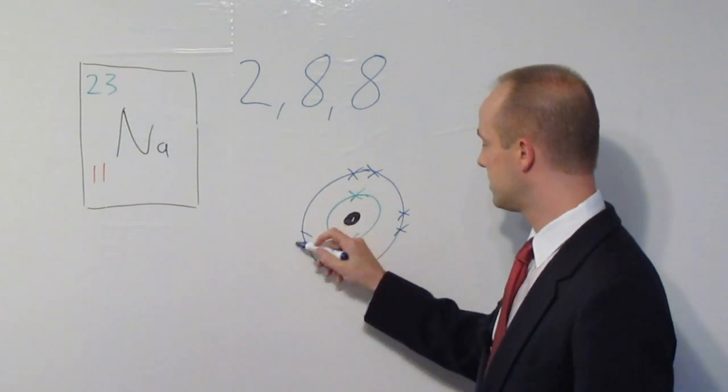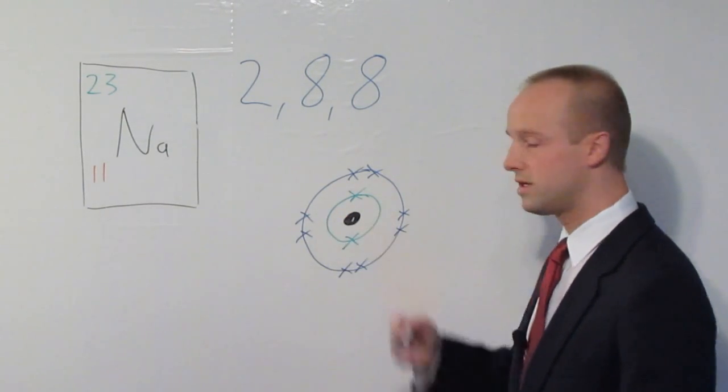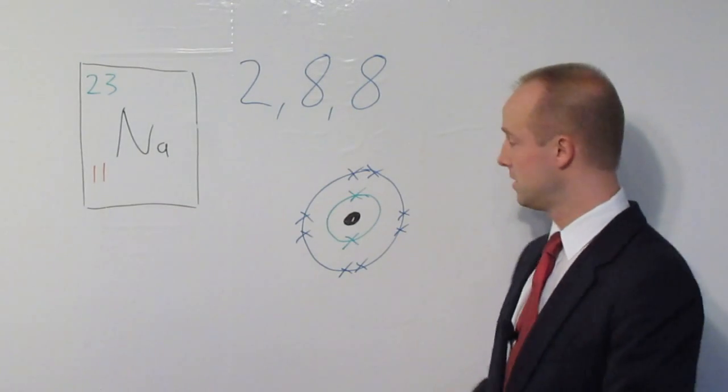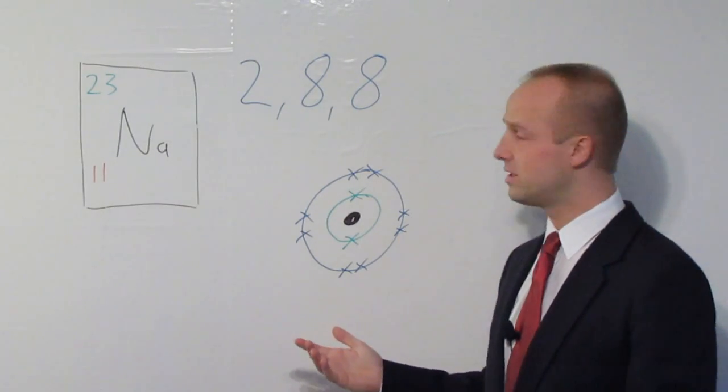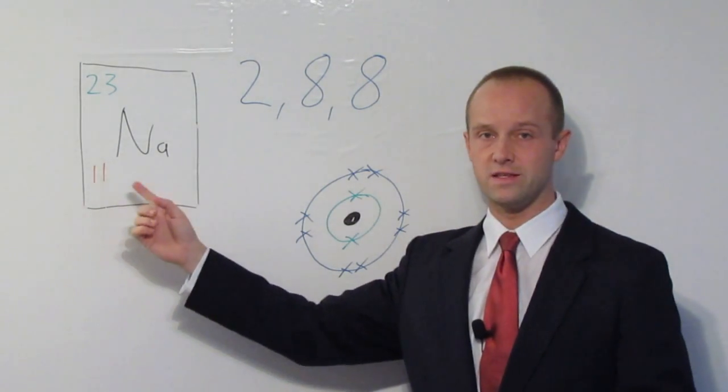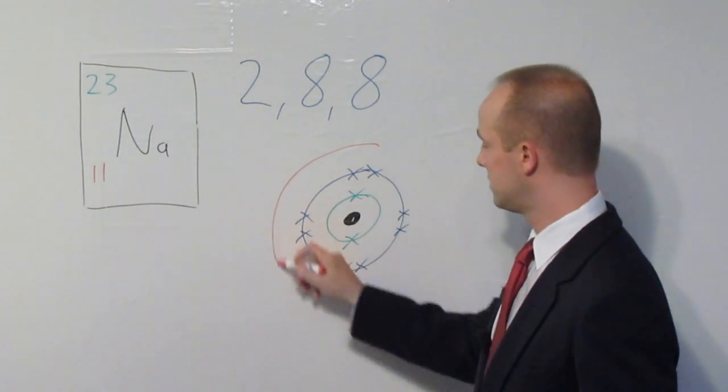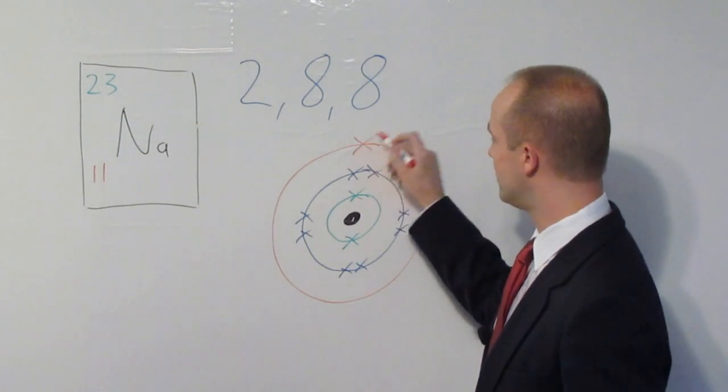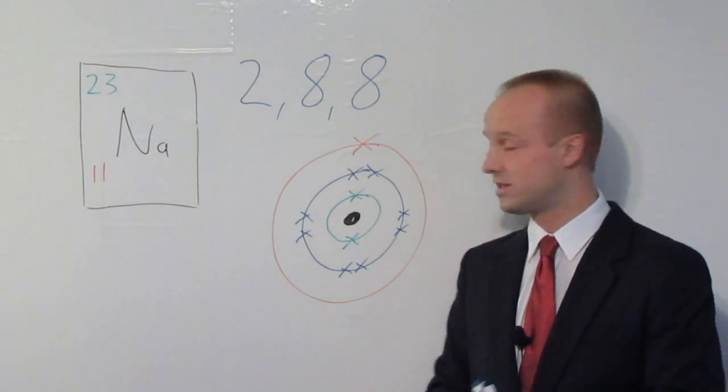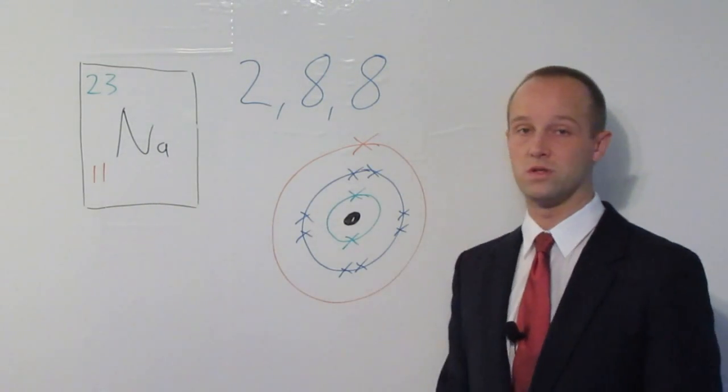five, six, seven, eight, plus the two in shell number one. That takes us to 10. We still have one more if we're going to get to this 11. So, we've just got one more shell to add around the outside of this, and that just has a single electron in it. So, now we've got all 11 electrons accounted for.